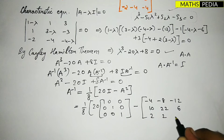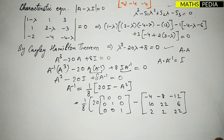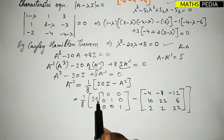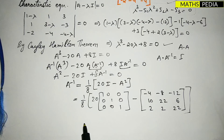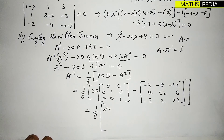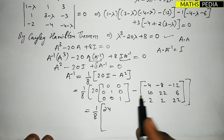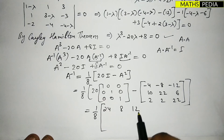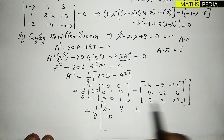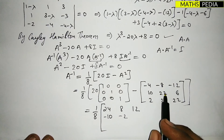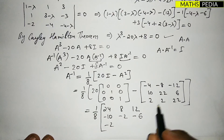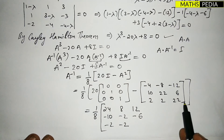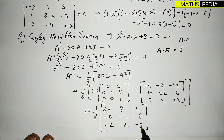Now subtract A² from 20I element by element. For example: 20 - (-4) = 24, 0 - (-8) = 8, 0 + 12 = 12, and 0 - 10 = -10. Continuing: 0 - (-2) = 2, 20 - 22 = -2, 0 - 6 = -6, 0 - 2 = -2, and 20 - 22 = -2. This gives the final matrix, which when multiplied by 1/8 is the answer for A⁻¹.